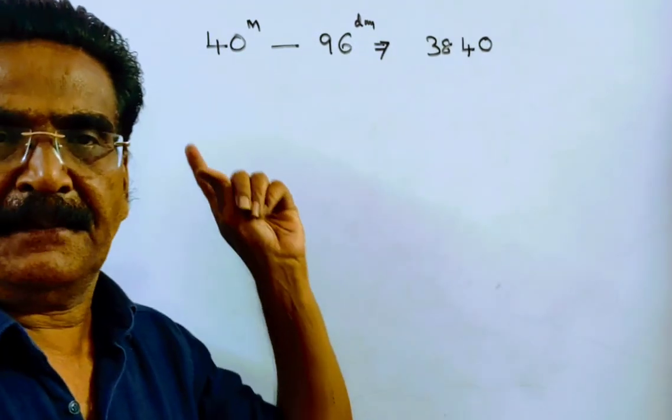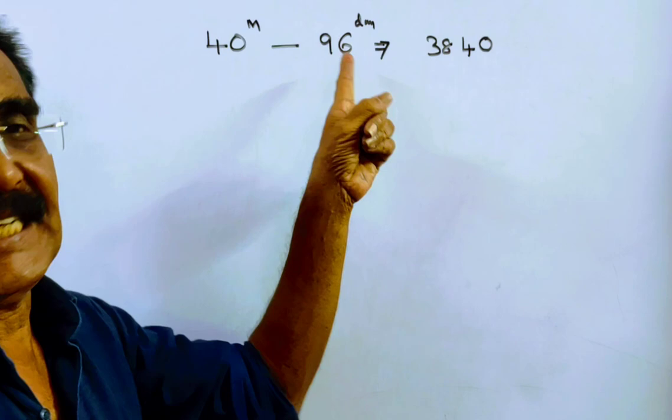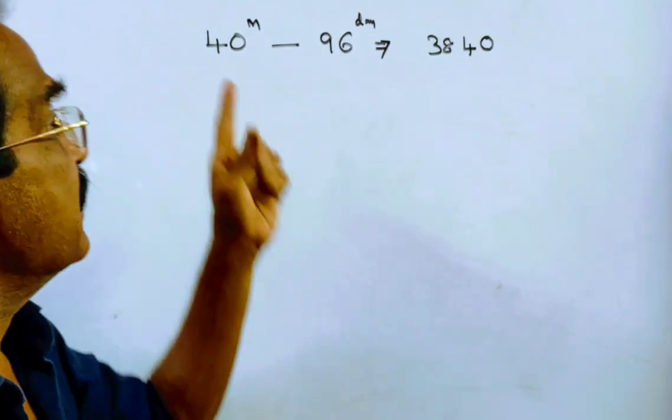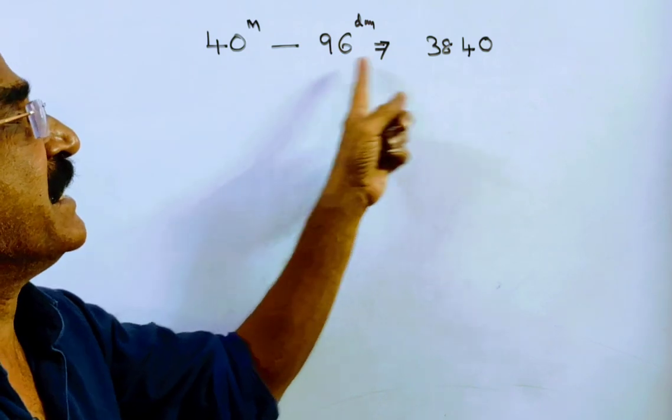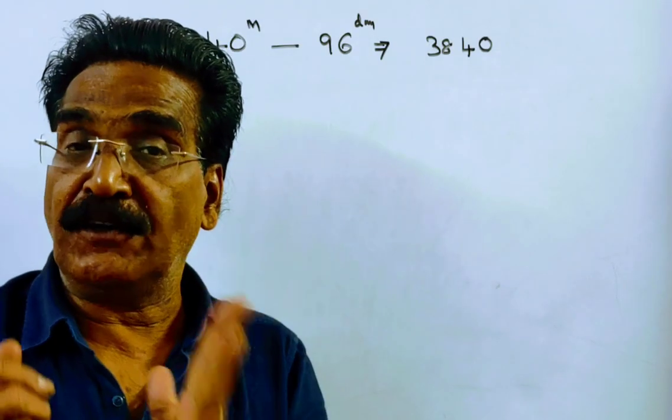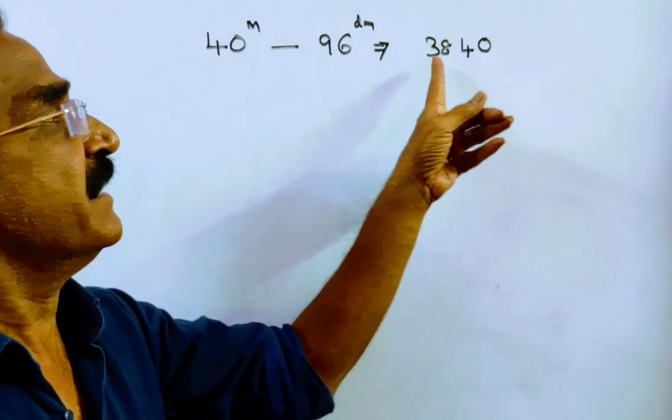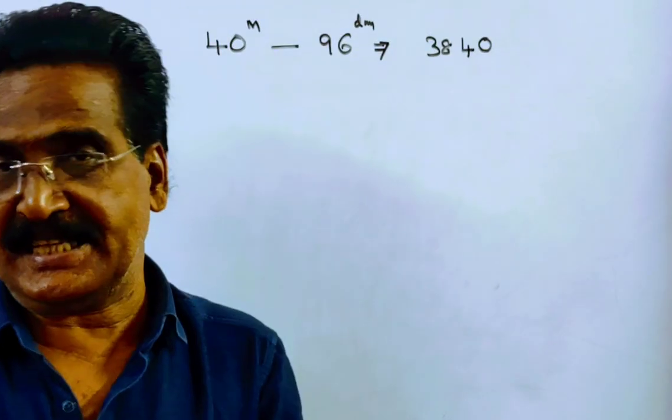See friends, 40 men can complete a work in 96 days. That means the total work is 40 into 96, 3840 days work is there.